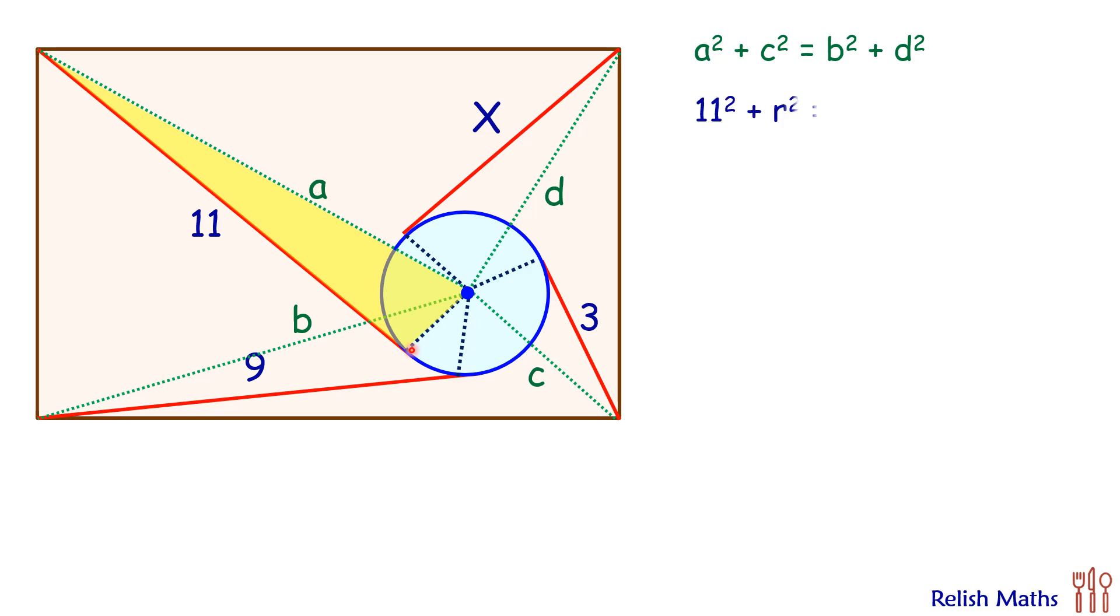So we can say 11² + r² = a². Now same way, if we consider this triangle on the opposite side, so here we can say that 3² + r² = c².